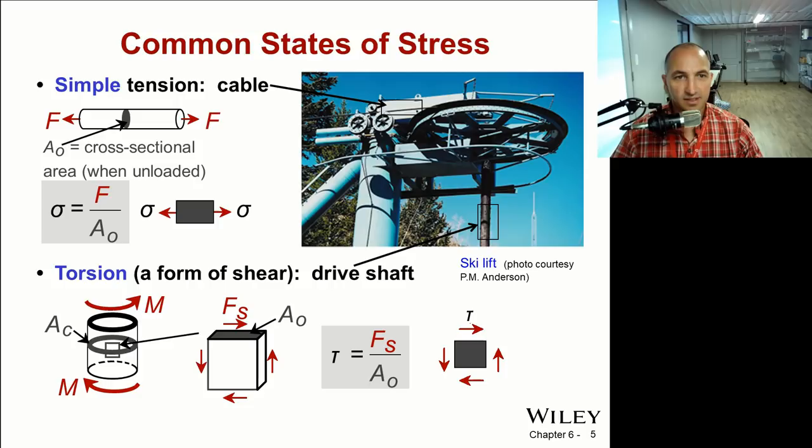There are some common states of stress. There is simple tension, this is synonymous to a cable on a ski lift for example, where all of the stress is along the longitudinal direction and stress is just F over A_0. Also in the ski lift you might have torsional stresses. On that axial shaft, if you look at the component here, everything is in shear. So shear stress for torsion is just F_s over A_0.